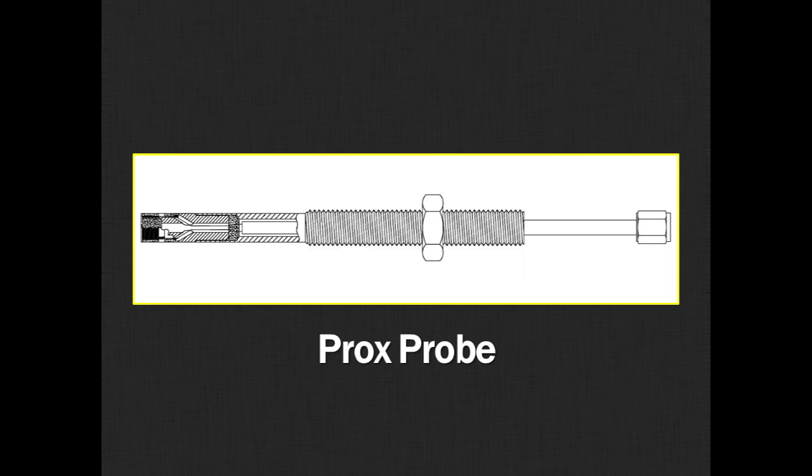Here's the typical probe. It's the tip we just showed you mounted in a stainless steel body. This is typically a 3/8-24 thread for many machines. Coming out the back we have a coaxial cable and a connector on the end so we can hook it up to the electronics.